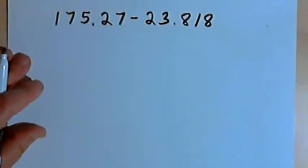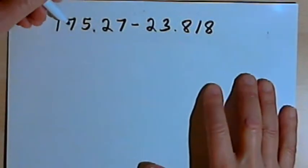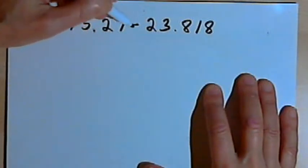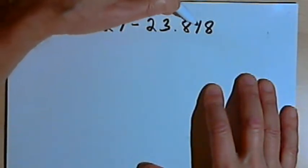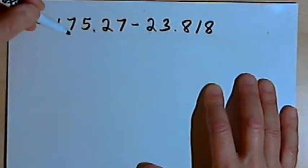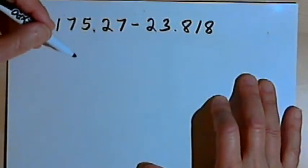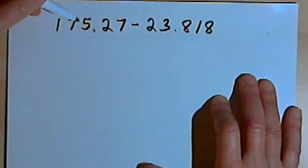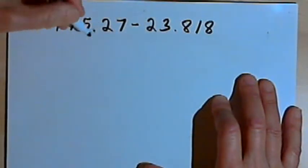So here's the problem we have. I've got 175.27 minus 23.818. I'm going to set this up with one number below the other, the number I'm subtracting below the number I'm subtracting from, and I want to make sure I line up my decimal points.